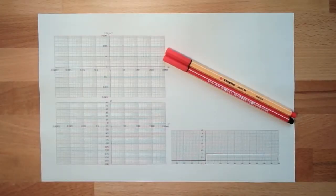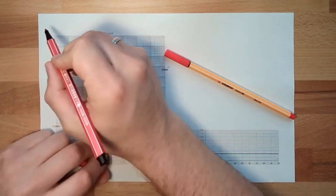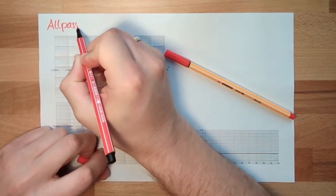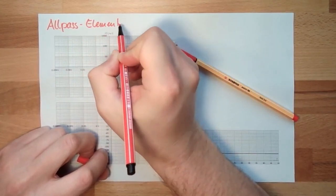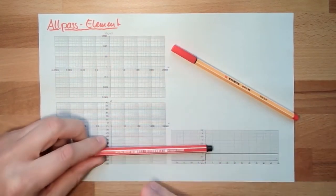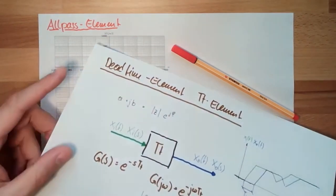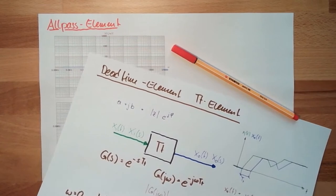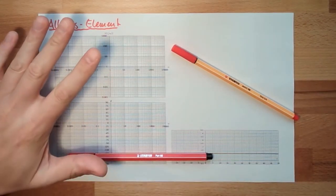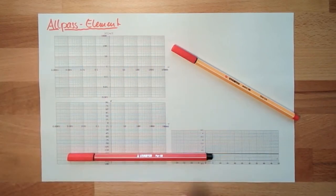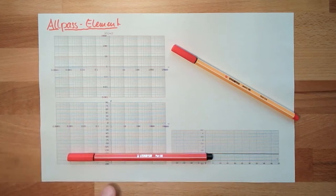Hello and welcome. This time we look at a strange element: the all-pass. There's not even a short name for it, it's just called all-pass. As the name already implies, the all-pass element lets pass all things. It is very similar to the dead time element — it also lets pass all things and it is a dead time. However, this dead time is not unlimited; it will stop at minus 180 degrees of phase.